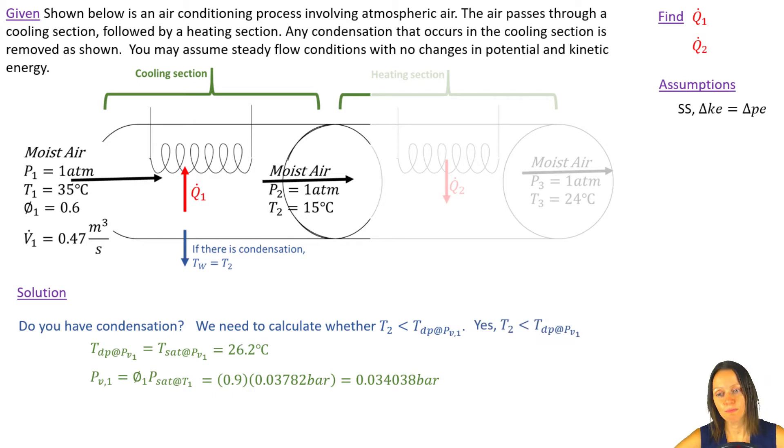So that answers the question. T2 is 15 degrees Celsius, and that's less than 26.2, so I've cooled below the dew point temperature. I do have condensation.